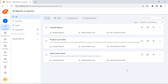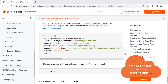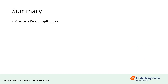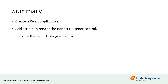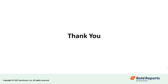In this demo, I showed you how to embed the report designer from the enterprise report server. You can also embed it from the cloud report server — I have provided the documentation link in the video description. In this video, I have shown you how to create a React application, add scripts to render the report designer control, and initialize it. There's a link to the documentation with the steps in this video. If you found this video useful, don't forget to click the like button and subscribe to our channel to watch more videos like this. Thanks for watching.